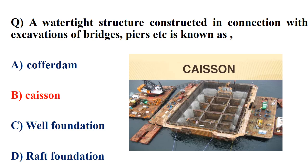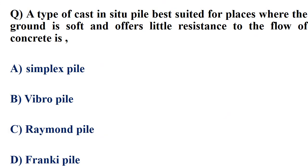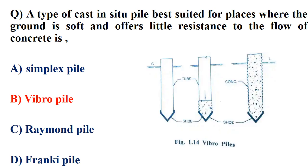A type of cast-in-situ pile best suited for places where the ground is soft and offers little resistance to the flow of concrete. This is a vibro pile, so the answer is option B.